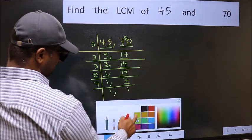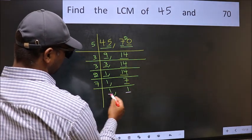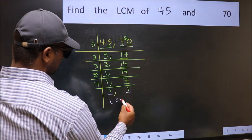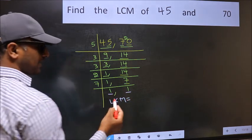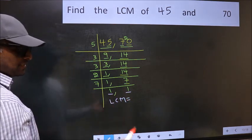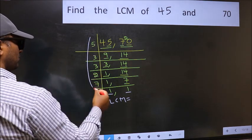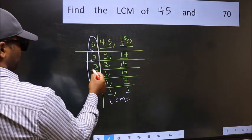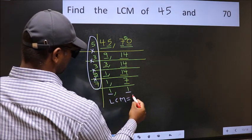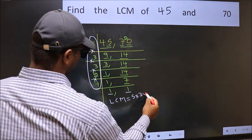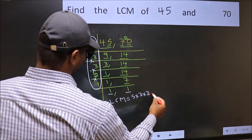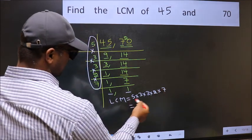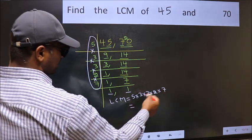So we got 1 in both places. Our LCM is the product of these numbers: 5 times 3 times 3 times 2 times 7. When we multiply these numbers, we get 630. So the LCM of 45 and 70 is 630.